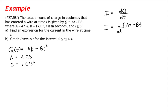The function is charge equals at minus bt squared. Differentiating this, we get that the current is equal to the derivative of at with respect to time, which is a, minus the derivative of bt squared with respect to time, which is 2bt.